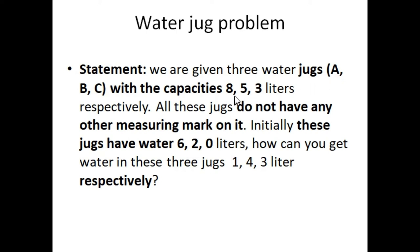It means jug A has the capacity of eight liters and jug B has the capacity of five liters. If we want to put six liters of water in jug B, then it will not be possible because the capacity of jug B is five liters.